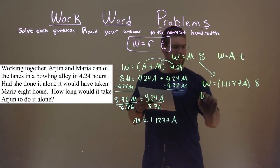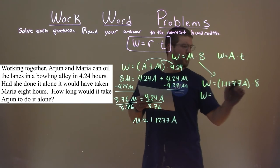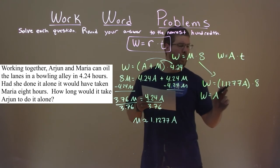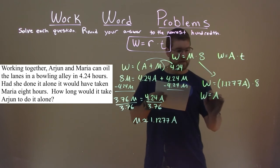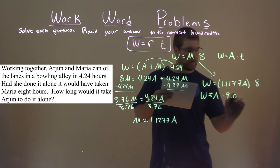And what happens here? Well, I'm going to rewrite it, let's put A first, it's all multiplication, and 1.1277 times 8 comes out to be approximately 9.02.